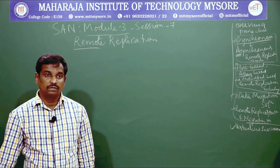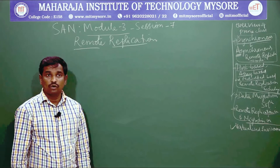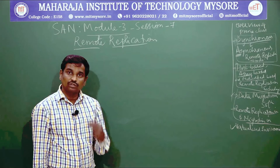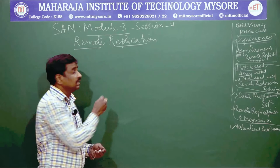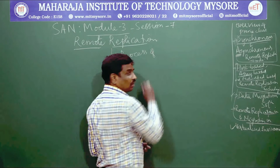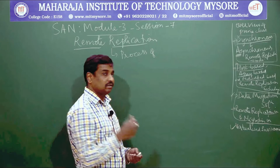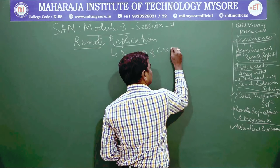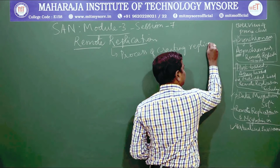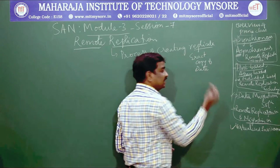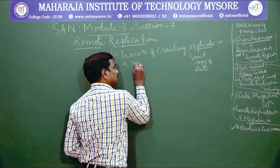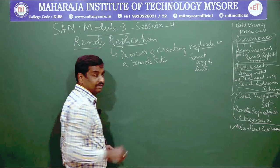Remote replication is the process of creating an exact replica of data at a remote site. This is done to address the risks associated with the region we are operating in — meaning we have a source site where data is generated, and that data needs to be transferred to a different location — the remote site.